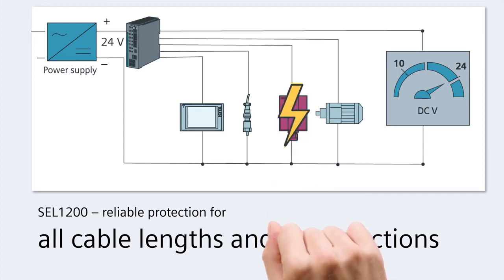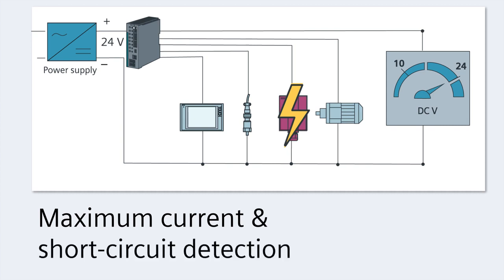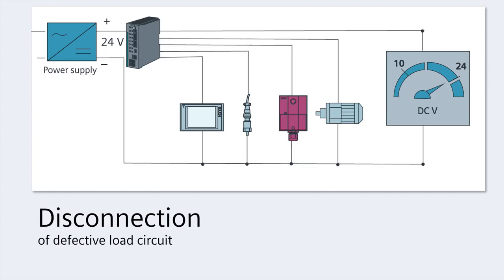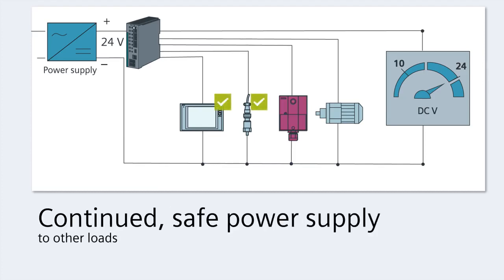In the event of a short circuit, the benefits are clear. The SEL1200 immediately detects the short circuit and disconnects the defective load circuit. Power continues to flow to the other loads without a voltage dip. This prevents a total plant shutdown.